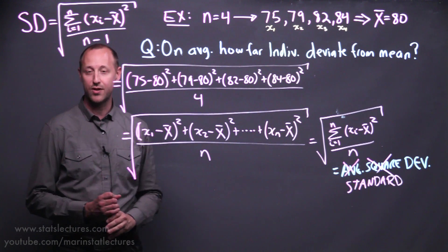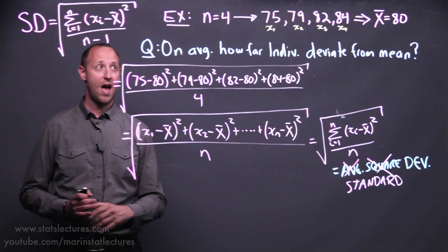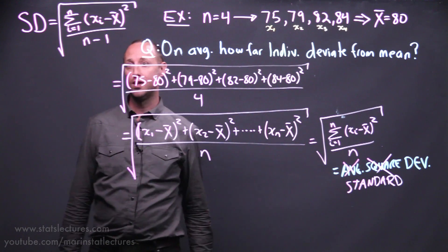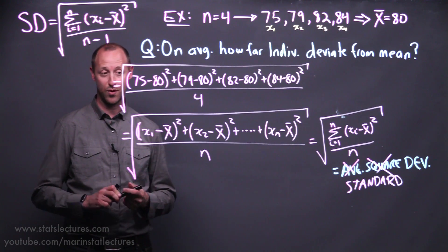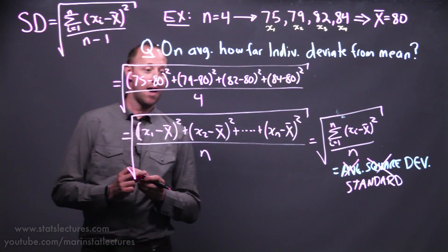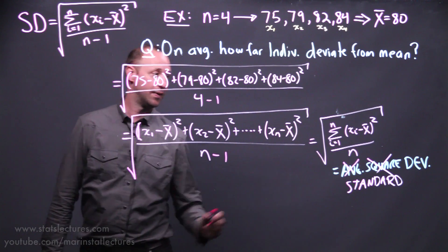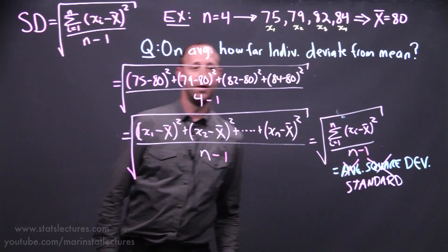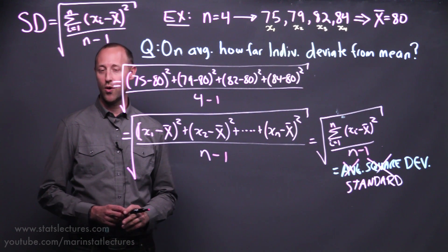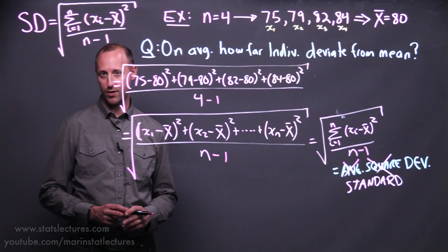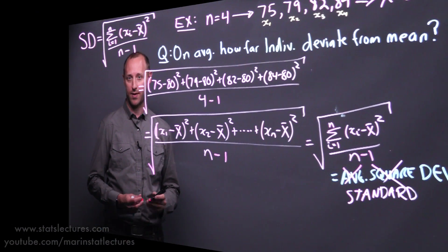But conceptually, it's fine for you to think of it as being the average deviation. Capturing, on average, how far does an individual's grade move from the mean. One other thing you might have noticed when you see this formula is that we actually have to subtract 1 in the denominator. So let's take a moment and talk about why that is. We're going to go at it from a more conceptual point of view rather than focusing on the mathematics.